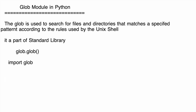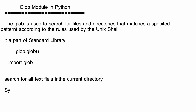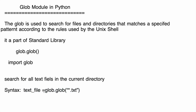First, how do we search for all text files in the current directory? The syntax is: text_files = glob.glob('*.txt'). This searches the present directory for all files with the .txt extension.